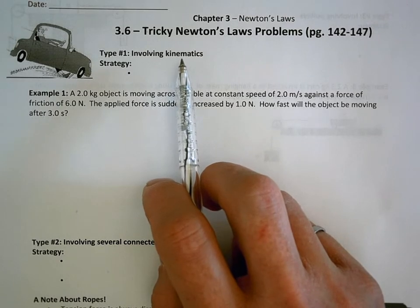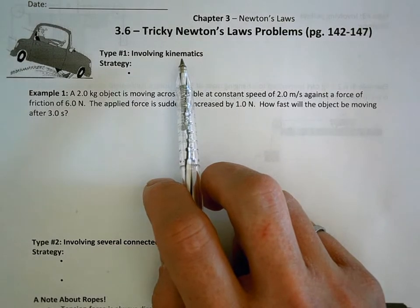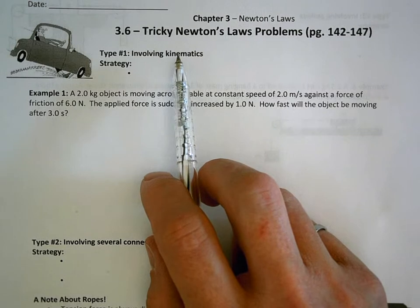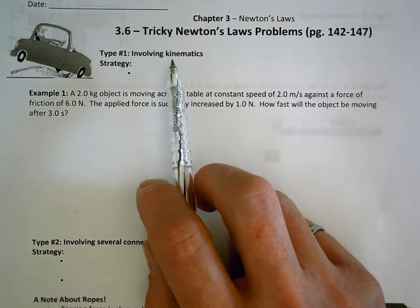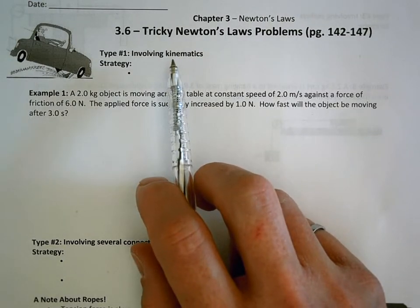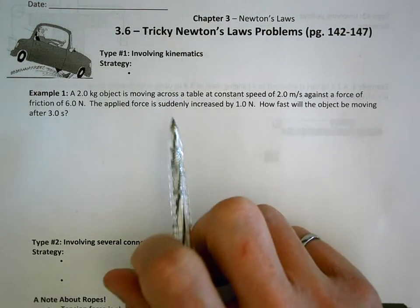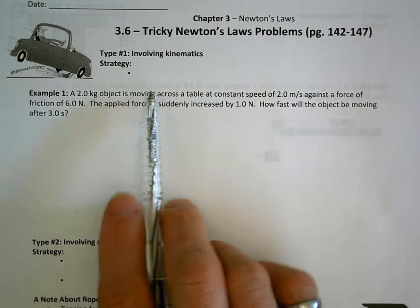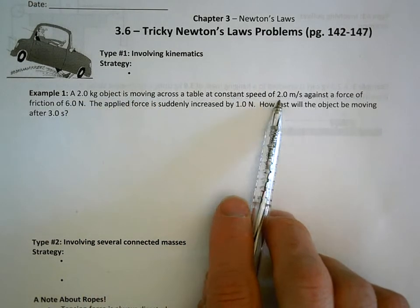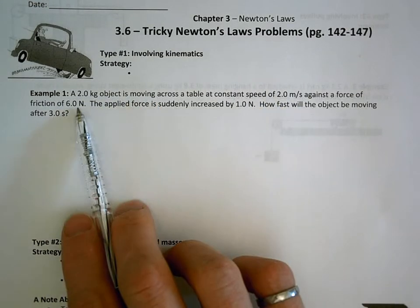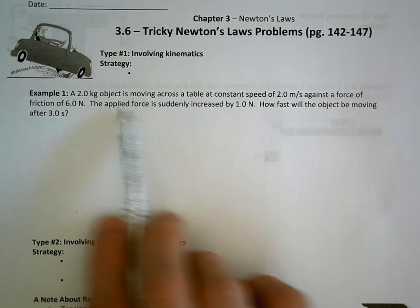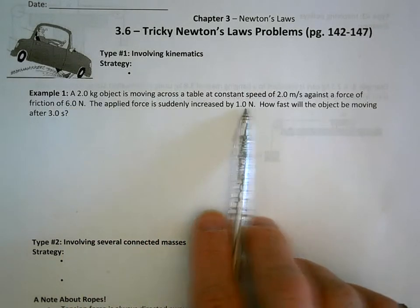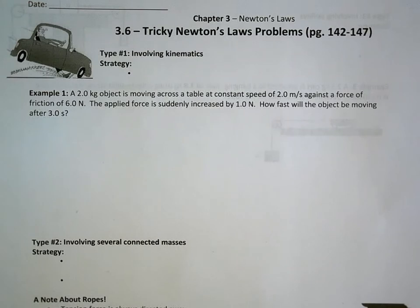You'll remember these from the first two chapters: velocity v1, v2, acceleration, displacement, time. When you see a combination of forces and those variables, you can rest assured you're probably going to have to use some of the big five equations. So let's read this question: a two kilogram object is moving across a table at a constant speed of two meters per second against a force of friction of six newtons. The applied force is suddenly increased by one newton. How fast will the object be moving after three seconds?